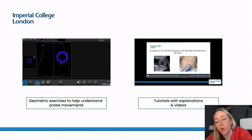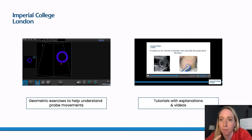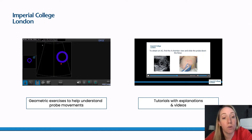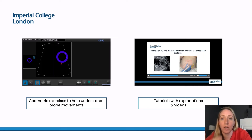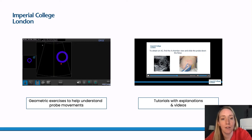The modules also contain geometric exercises — more basic shapes that the trainee manipulates using the probe — as a way to teach probe movements in a simpler fashion. Some exercises are general while others are specific to a particular module. For instance, the femur length module has a specific geometric exercise where the probe movements used are similar to those needed to obtain a femur length.